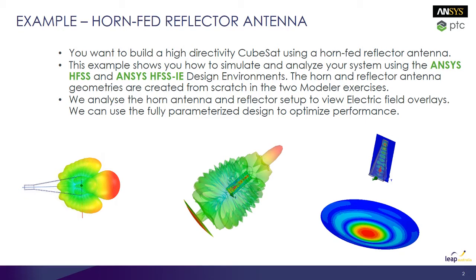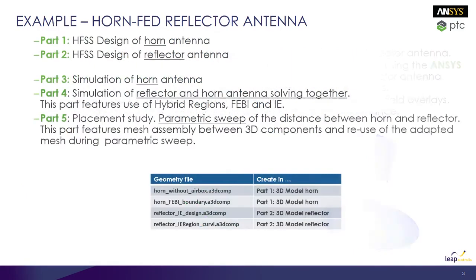We'll first build up this waveguide-fed horn antenna, then we'll create the reflector. We'll combine both of these geometries and then view electric field overlays and 3D radiation patterns as shown. We can use a fully parameterized design to optimize the performance of our system.